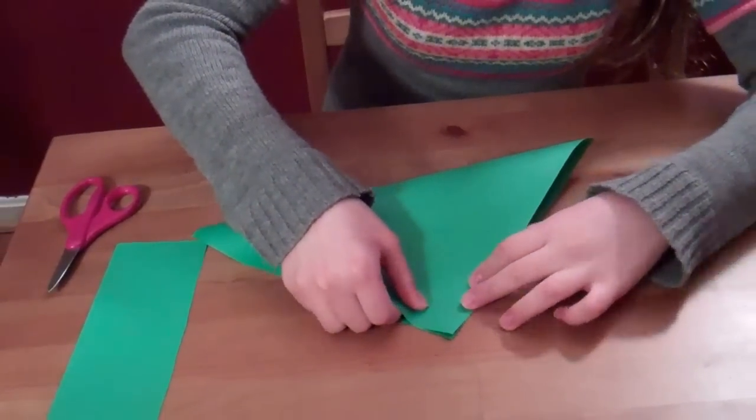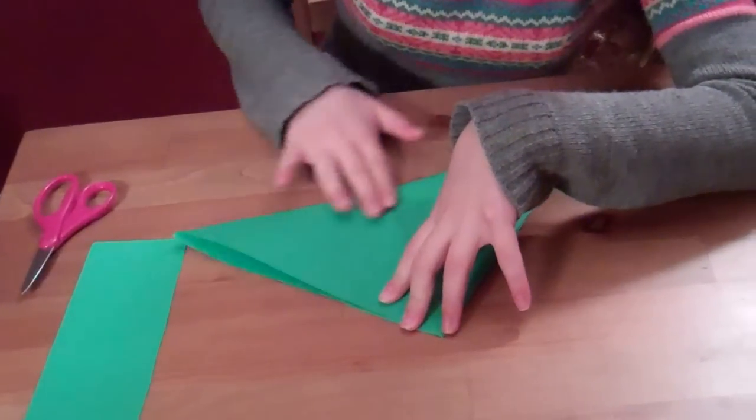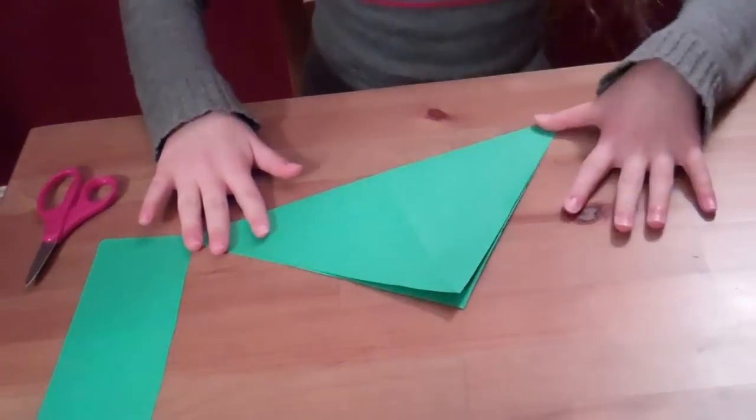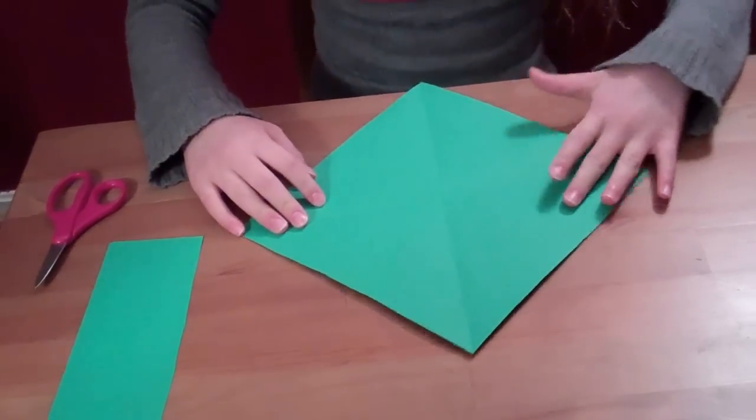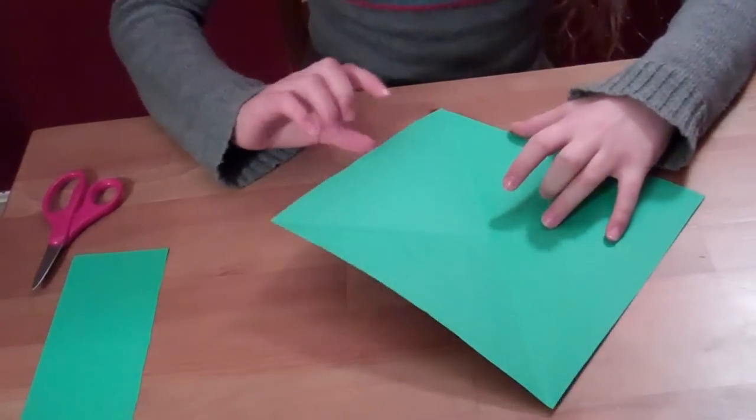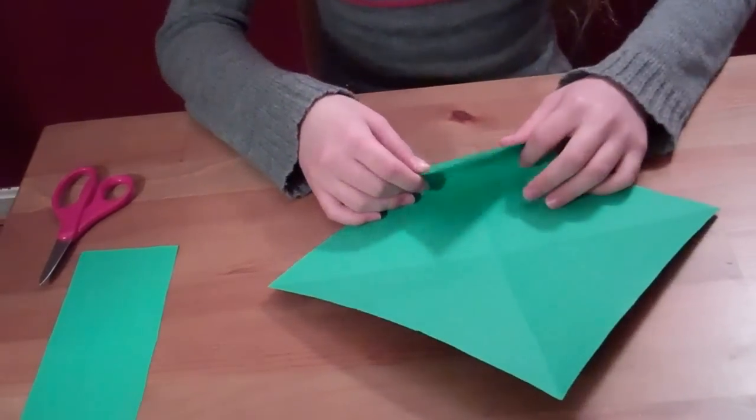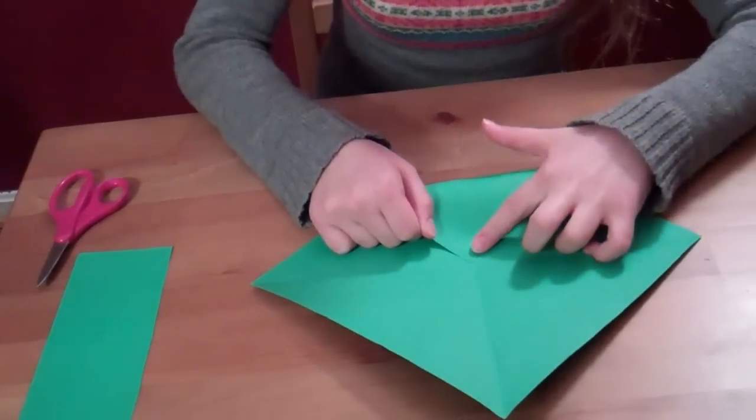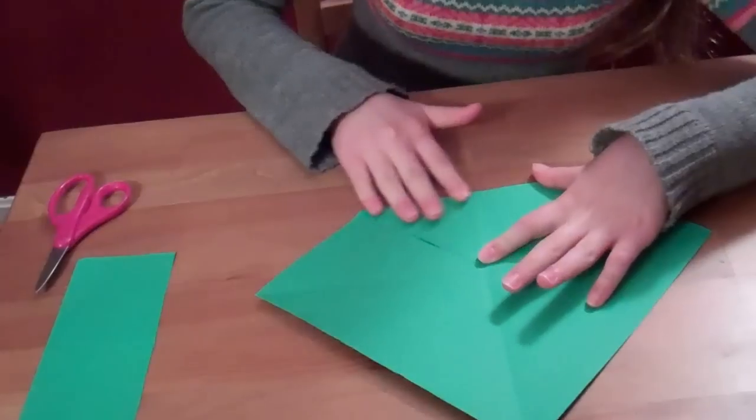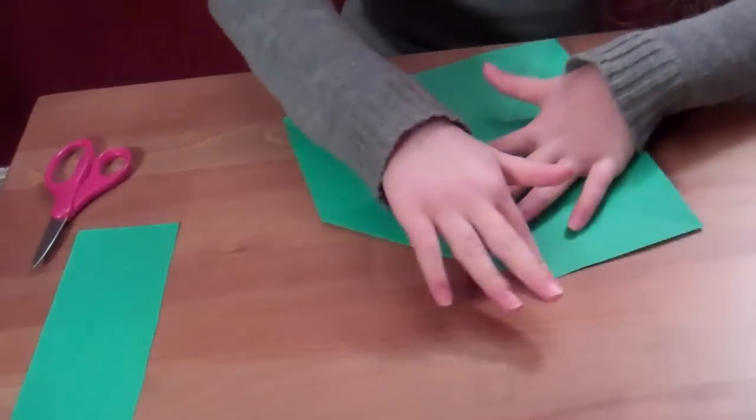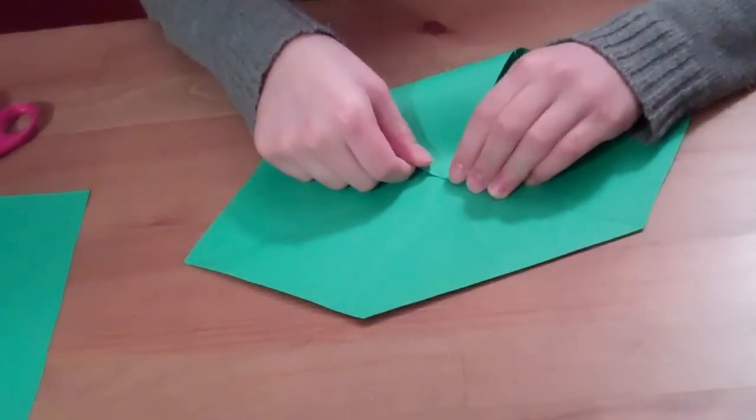Fold it the other way in half. Should be a triangle, and then open it up. Now take one of the sides—it doesn't matter which one of the corners—and fold it to the middle. Turn it around and fold the opposite corner to the middle.